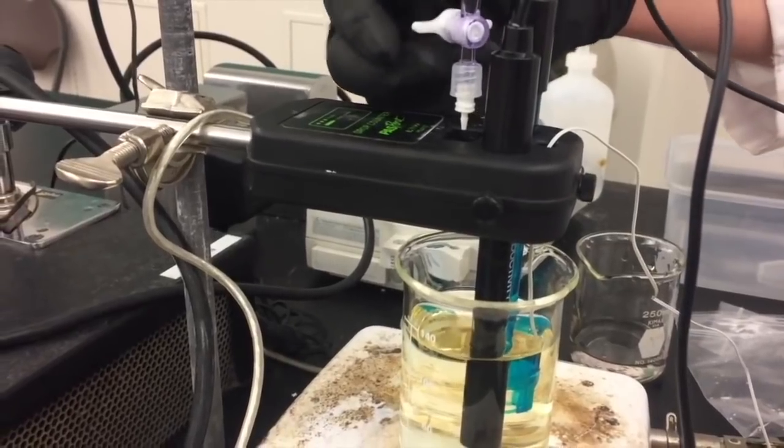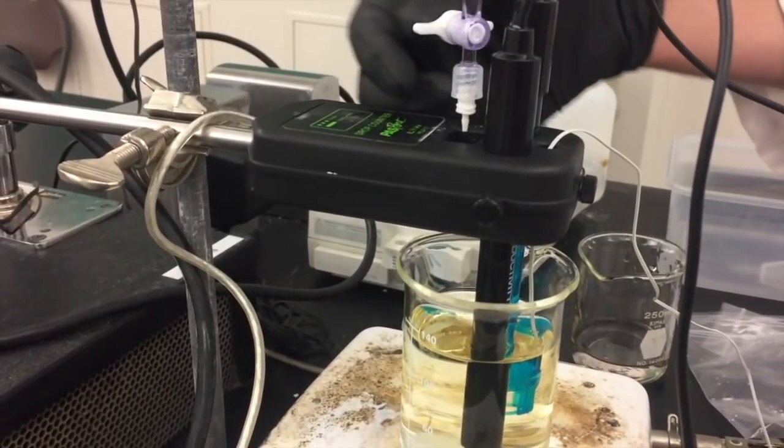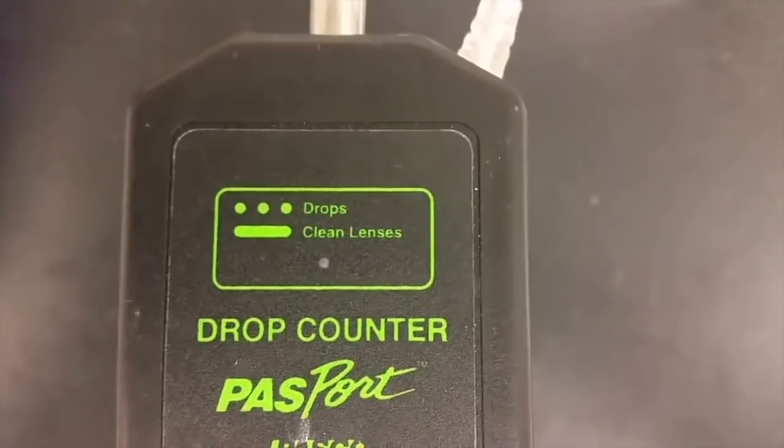Next you'll want to check the position of the drop dispenser above the drop counter. You want to make sure that the tip on the drop dispenser is centered directly above the opening in the middle of the drop counter and that it's about a centimeter above the opening. It shouldn't be too high because then the drops can splash and if it's too low and sitting inside the drop counter then the drops don't get counted.